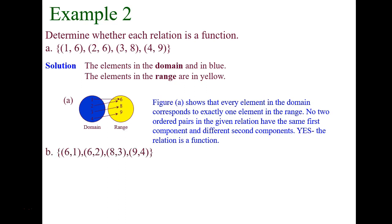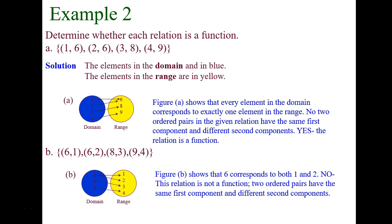Now compare that to this example — a different relation, still four ordered pairs. Does every input map to only one output? You should see right away that the input 6 maps to both 1 and 2. That's not a function. Every input can only go to one output. This violates the definition of a function because 6 has two outputs, so this is not a function. If you're looking at a list of ordered pairs, a quick check is to look at the domain values — if any repeat, it's not a function.